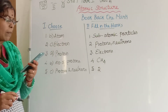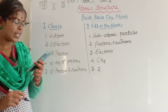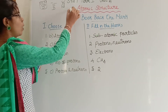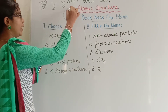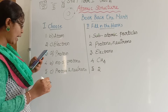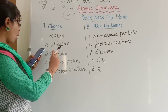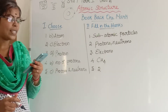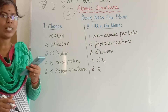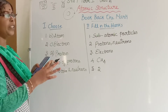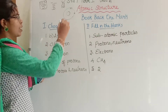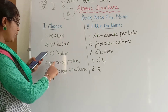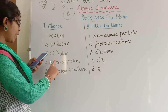Second question: the subatomic particle which revolves around the nucleus. The particle that revolves around the nucleus is the electron. So the answer is option C, electron. Third question: what is positively charged in an atom? The positively charged particles in an atom are protons. So the answer is option A, proton.